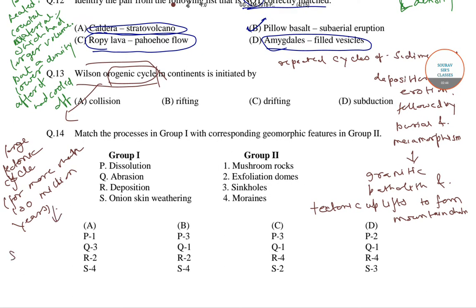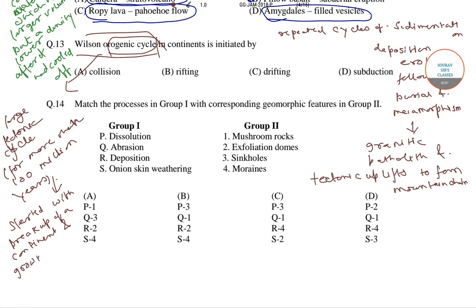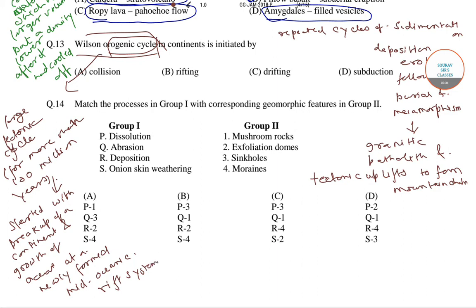So it is started with the break-up of a continent and growth of an ocean at a newly formed mid-oceanic rift system. Therefore, the correct answer of this question is option number B — the Wilson orogenic cycle in continents is initiated by rifting.